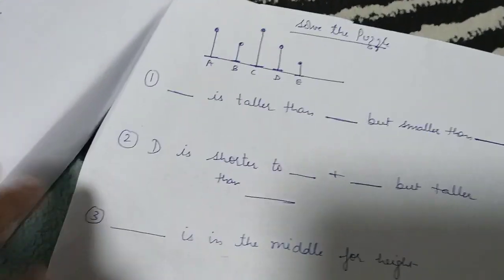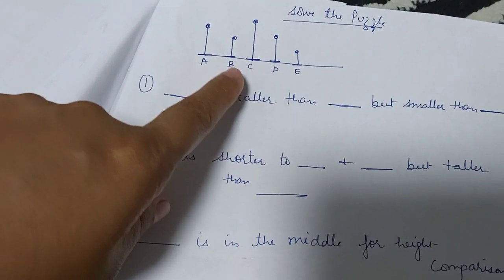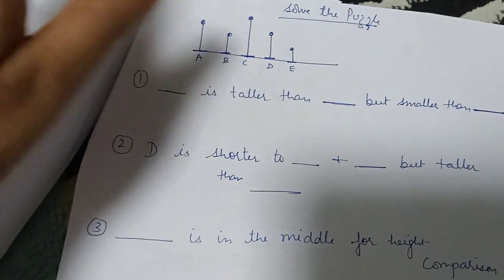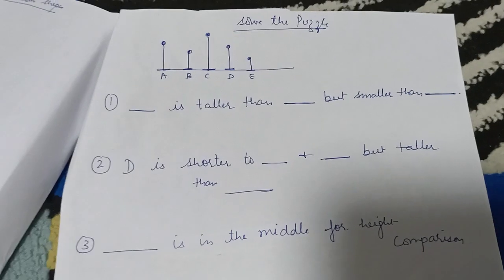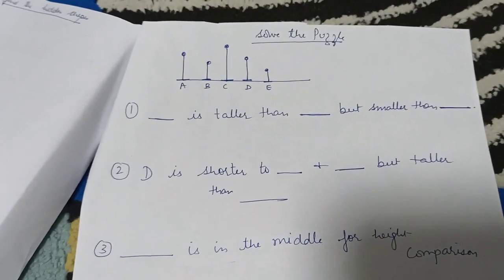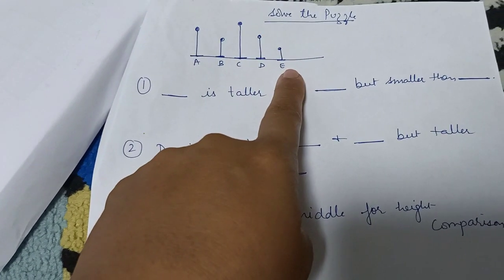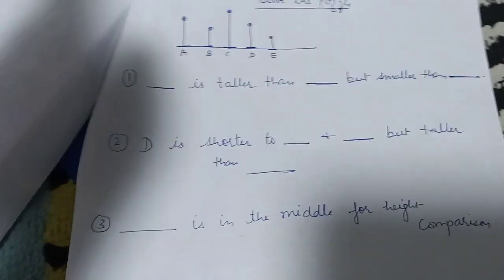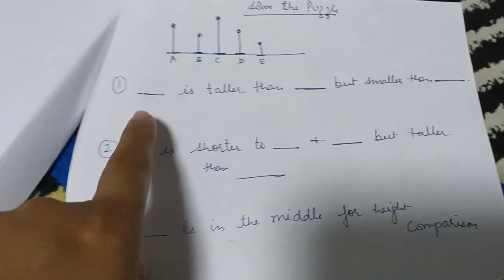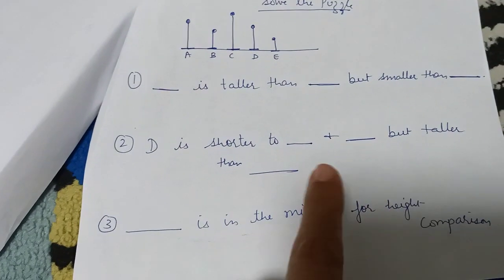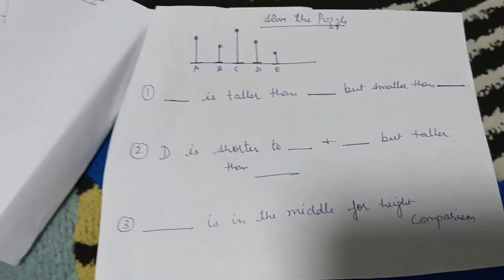Again, it's a puzzle, a simple puzzle. It's about height. I have drawn different poles of different heights. There are five. One in the middle size. Dash is taller than dash but smaller than this. So it will be a middle-size thing which is taller than this. It can be D because D is taller than E but smaller than C. It can be any of the middle, not the longest and shortest. Now D is shorter to what and what but taller than this. And the last one is in the middle for height comparison. So whose height is in the middle? I think I have made D in the middle.